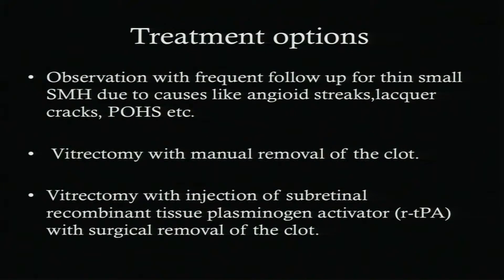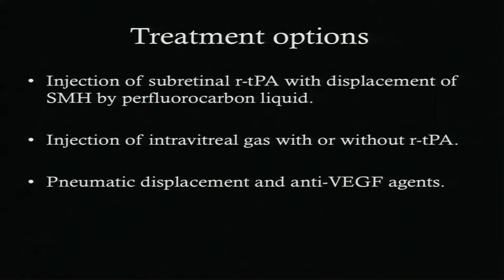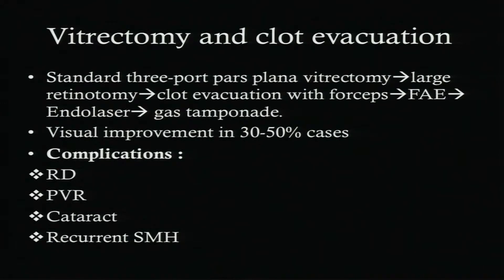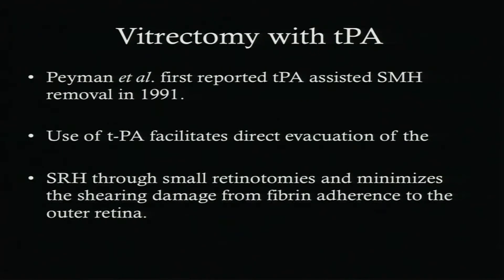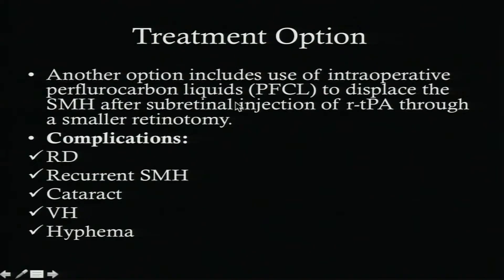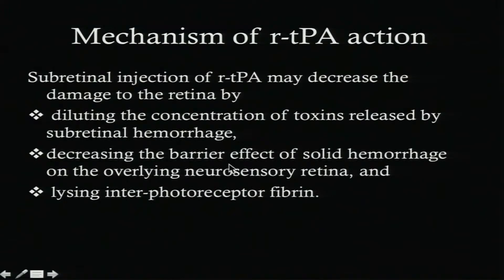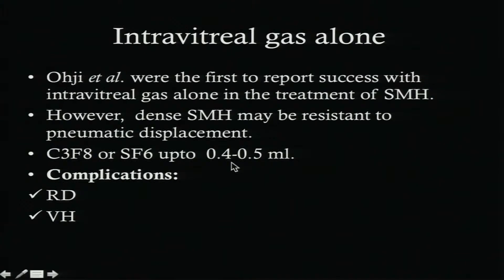We have many options ranging from observation, vitrectomy, TPA injection, and pneumatic displacement, but we'll focus on submacular surgery. The first option is intravitreal gas alone for mild or moderate cases. In trauma with choroidal rupture we usually use SF6, as 14 days is sufficient to displace the blood, with the patient maintaining face-down positioning. An anti-VEGF agent can also be combined.